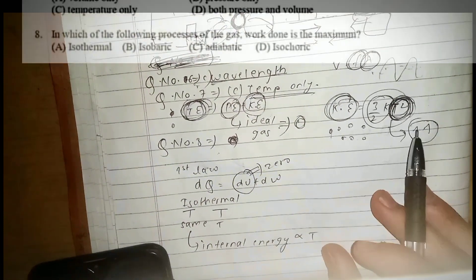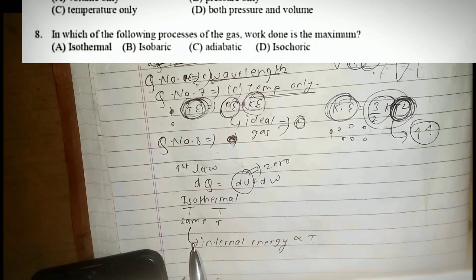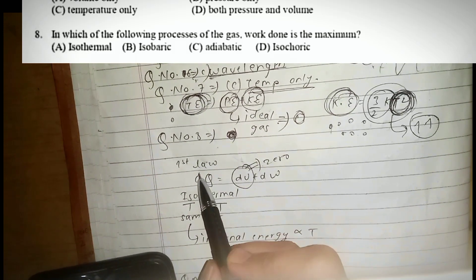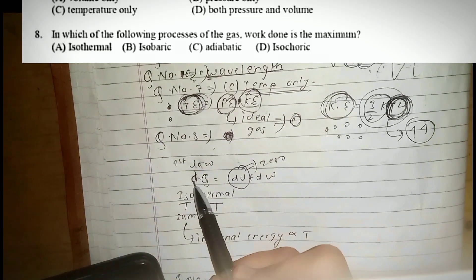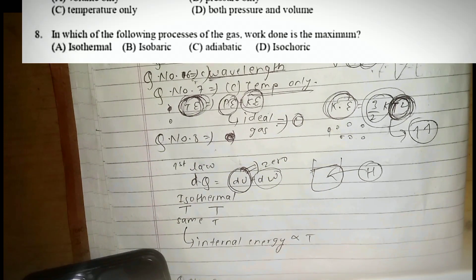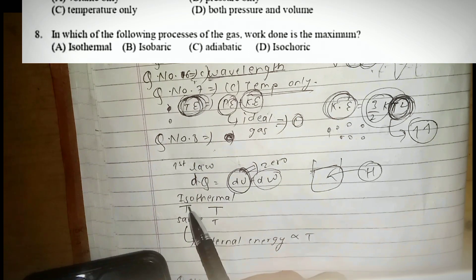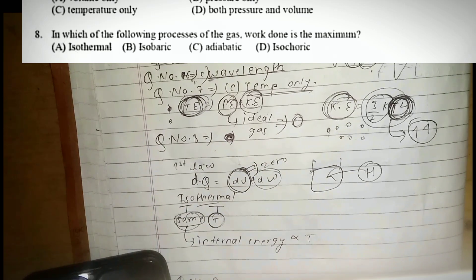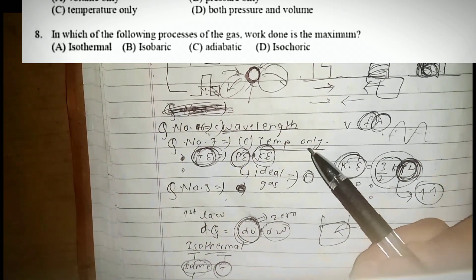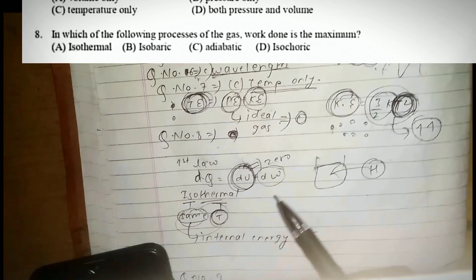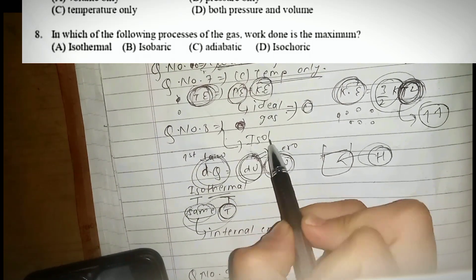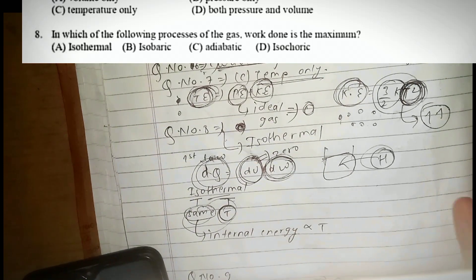Question number eight: which of the following processes of gas has constant temperature? Isothermal means temperature is the same — temperature is constant. Internal energy is related to temperature, so if temperature does not change, internal energy stays the same. The answer to question number eight is isothermal.